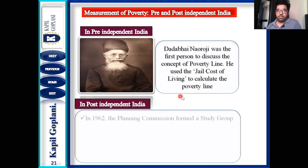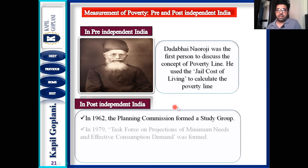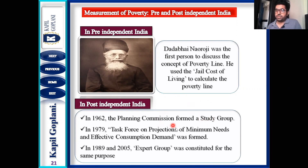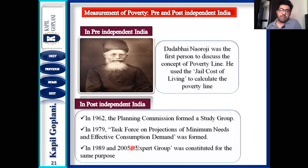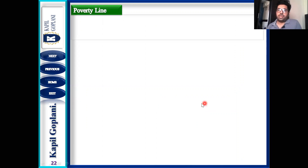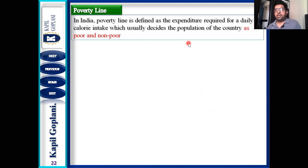Post-independence, in 1962 the Planning Commission formed a study group. In 1979, a task force on projections of minimum needs and effective consumption demand was formed. In 1989 and 2005, expert groups were constituted for the same purpose. All of them tried to calculate the poverty line for India.